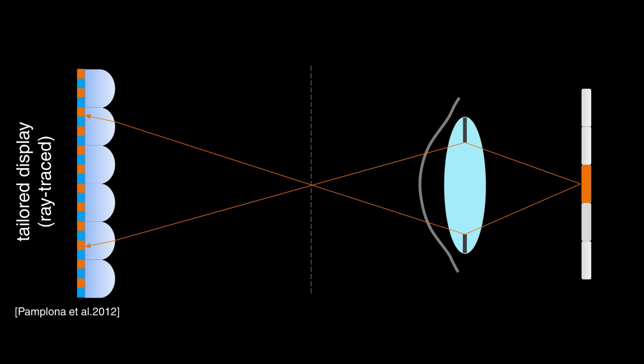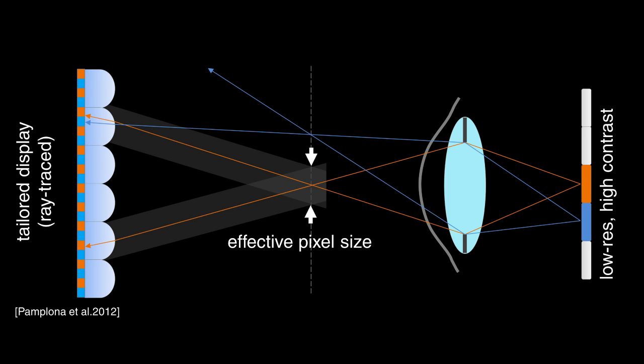Pamplona et al. uses a light field display, so that each ray is mapped to exactly one view. Due to the number of views required, the received pixel is large, and the resolution is low.